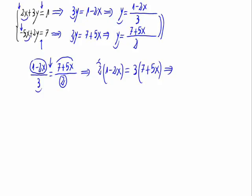2 times 1, 2. 2 times minus 2x is minus 4x. Equal to 3 times 7, 21. And 3 times 5x is 15x.